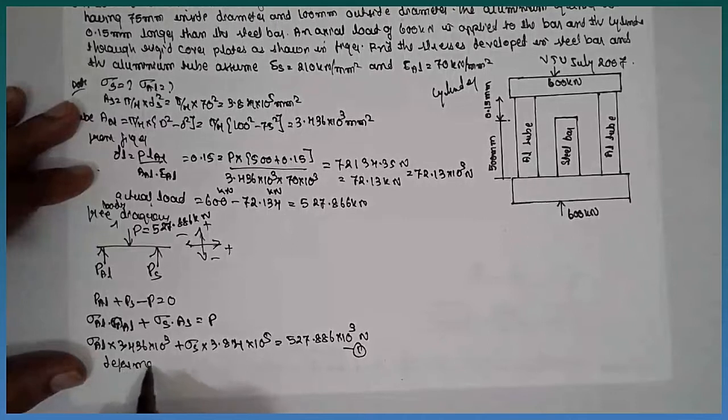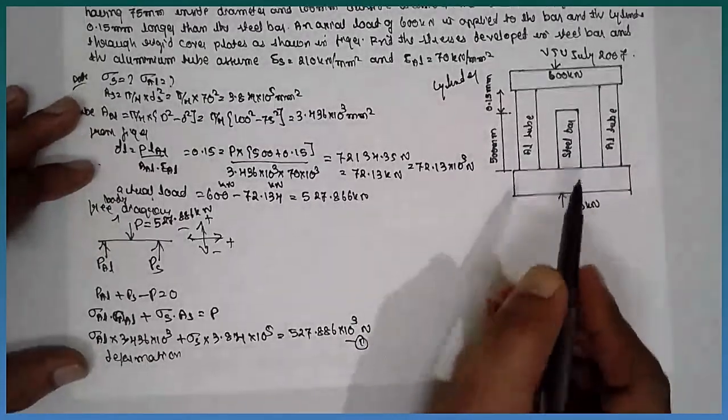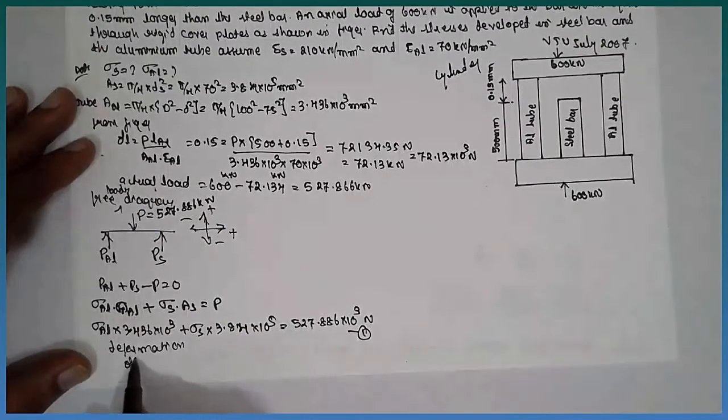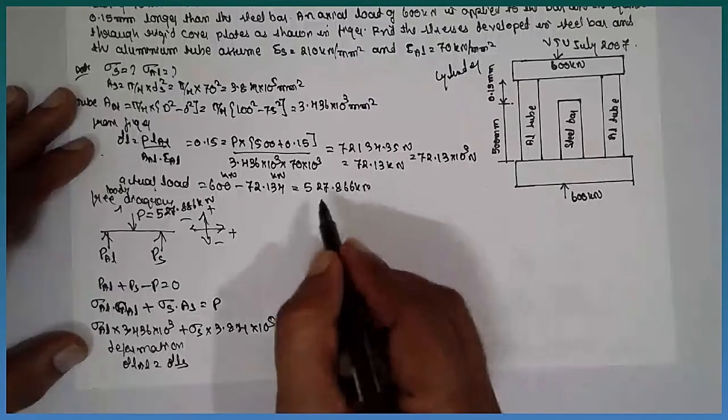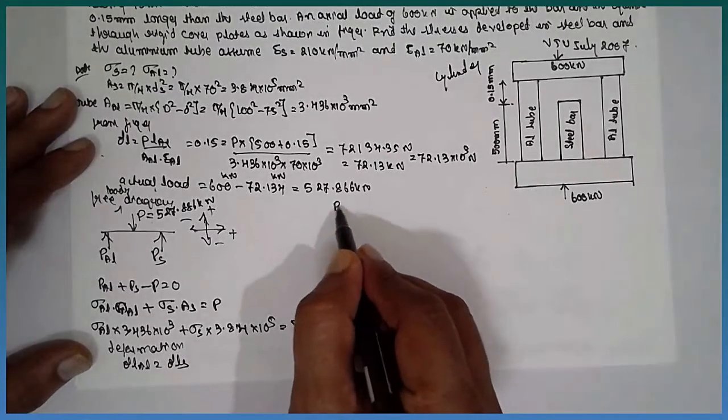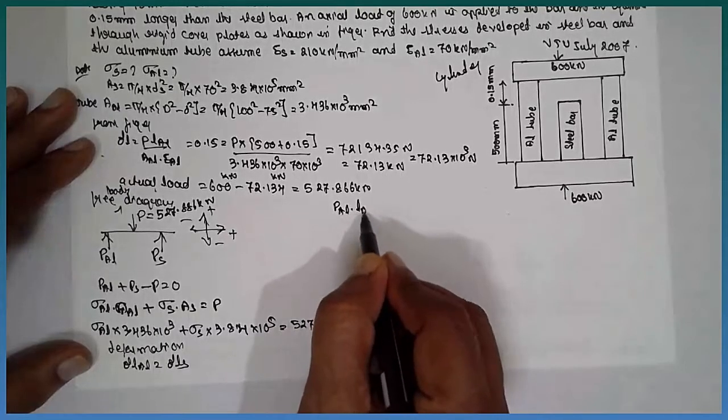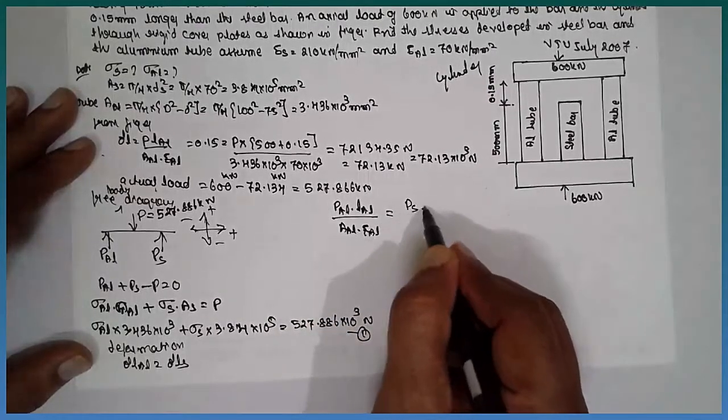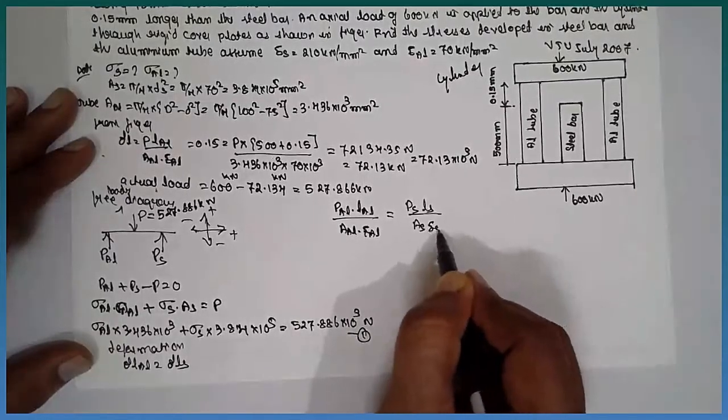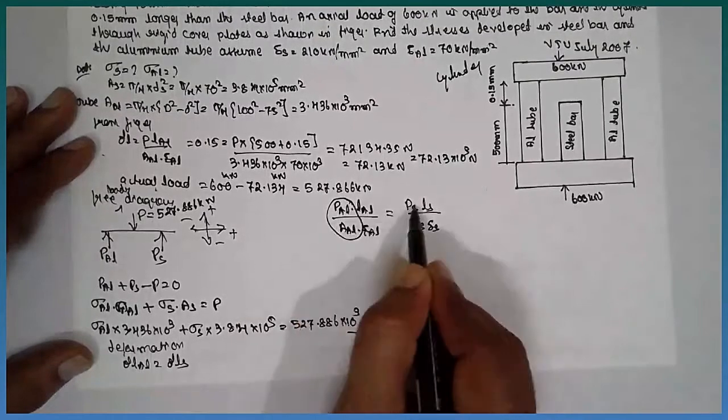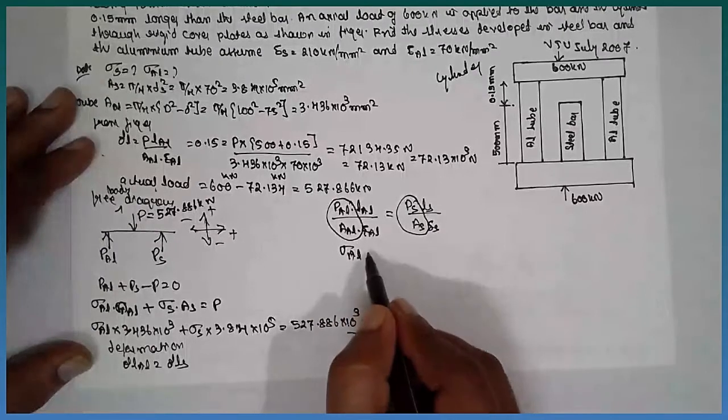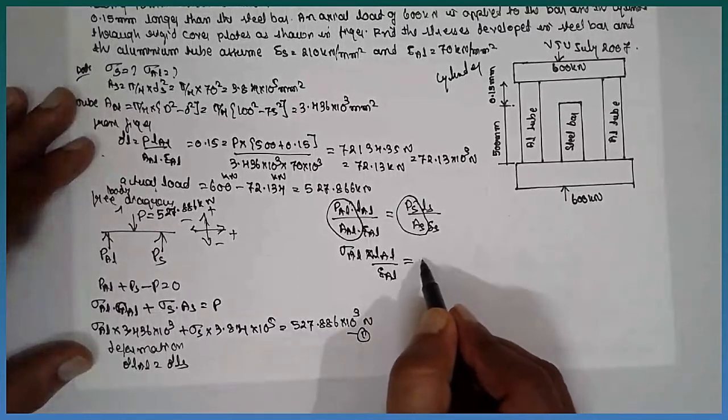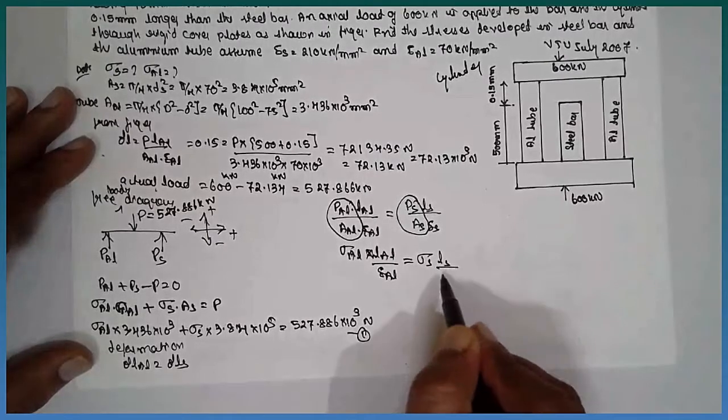Deformation: aluminum and steel are equal. That is the concept. Deformation in case of aluminum is equal to deformation in case of steel. The formula: P AL, L AL divided by A AL into E AL equals P S L S divided by A S E S.